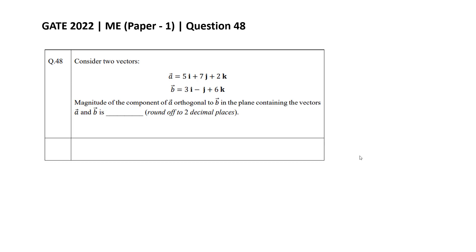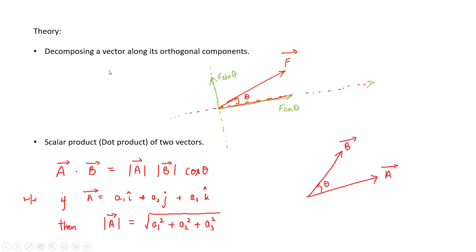Hello everyone. In this video we will solve GATE 2022 ME Set 1 question number 48, which is from the topic engineering mathematics. The question is: consider two vectors a = 5i + 7j + 2k and b = 3i − j + 6k. The magnitude of the component of vector a orthogonal to b, in the plane containing vectors a and b, is to be found.